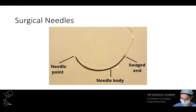Round-bodied needles are used in friable tissues such as the liver or kidneys. Cutting needles are triangular in shape and have three cutting edges to penetrate tough tissues such as skin and sternum — they have a cutting surface on the concave edge. Reverse cutting needles have a cutting surface on the convex edge and are ideal for tough tissues such as tendon or subcuticular sutures, with a reduced risk of cutting through tissue.